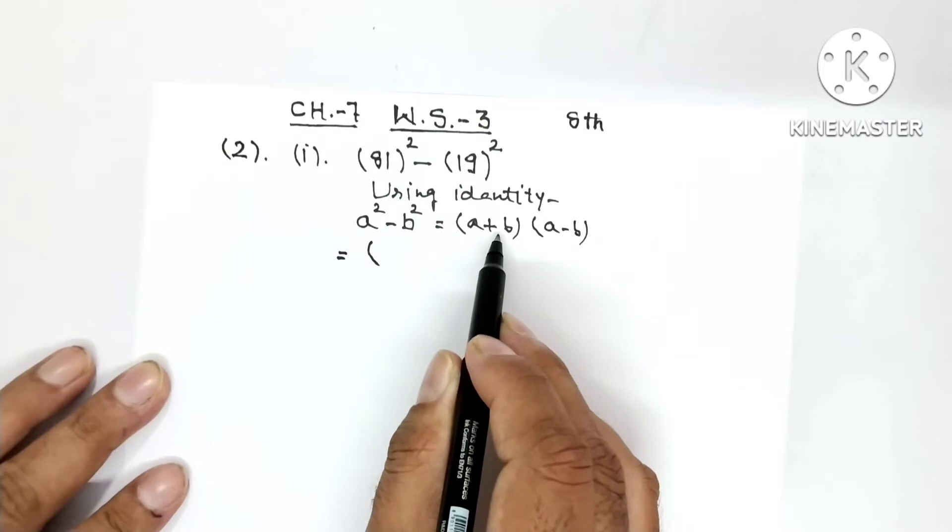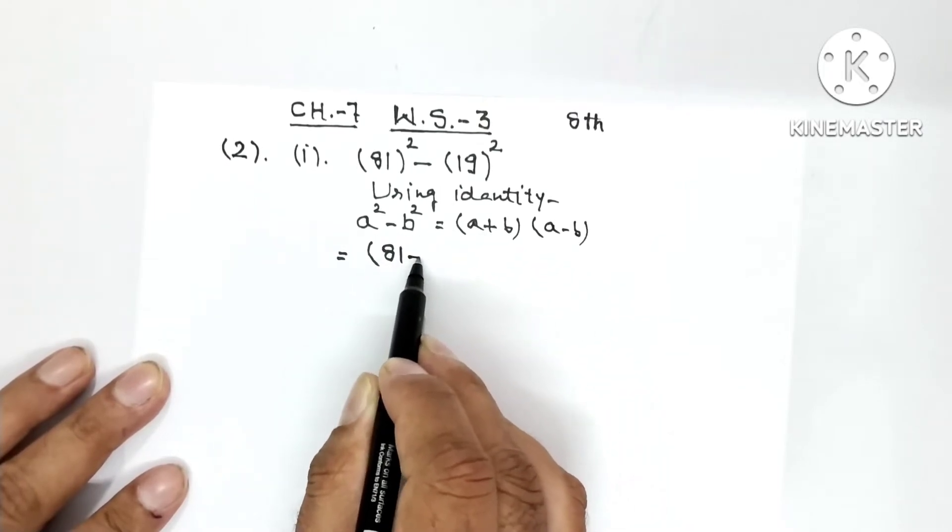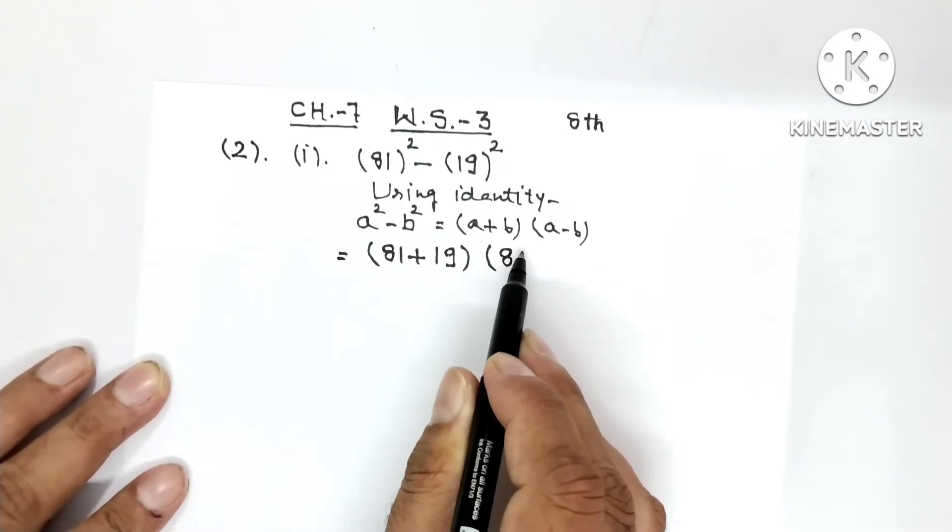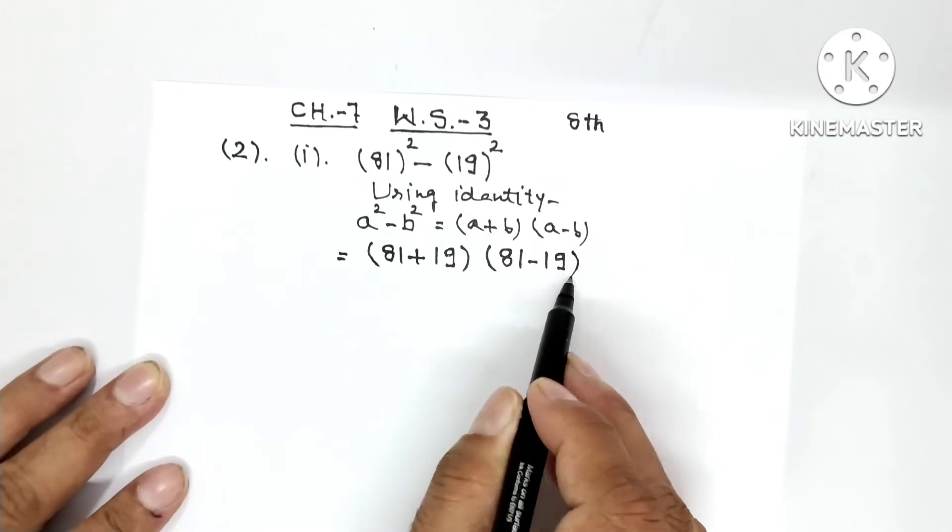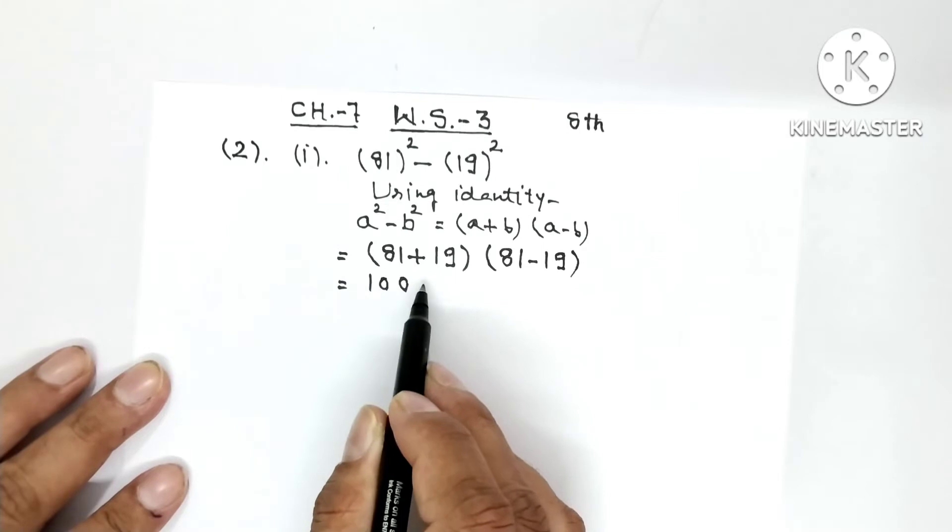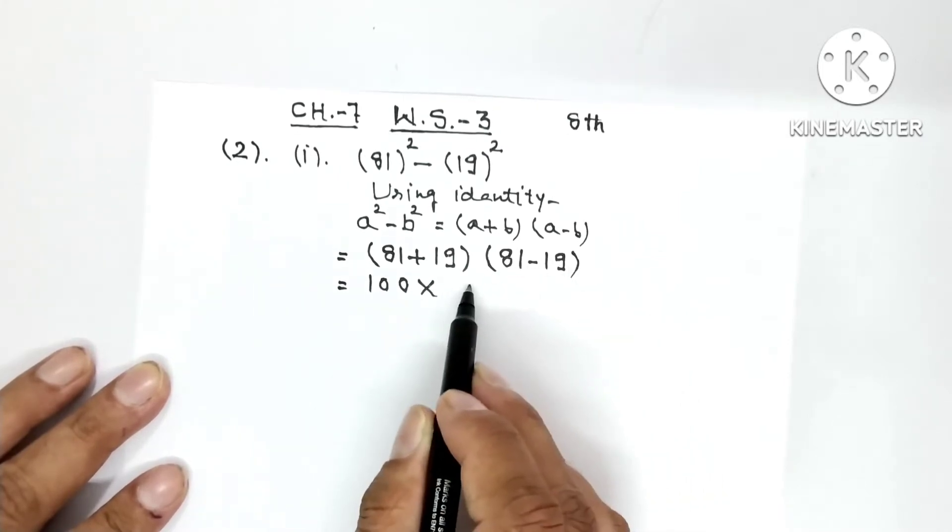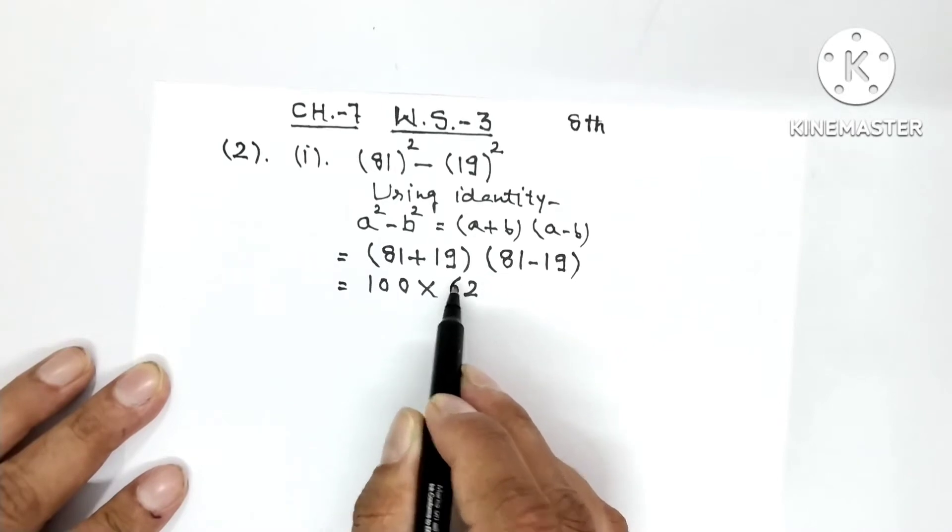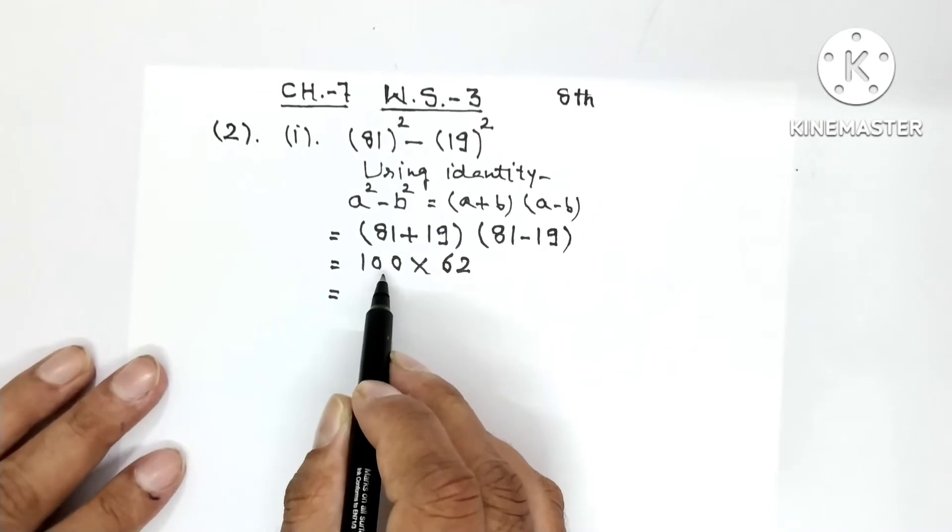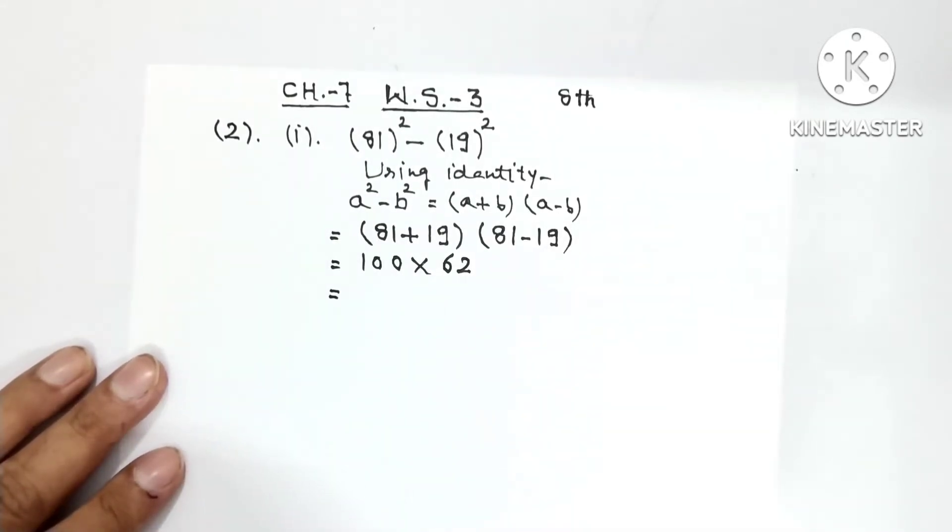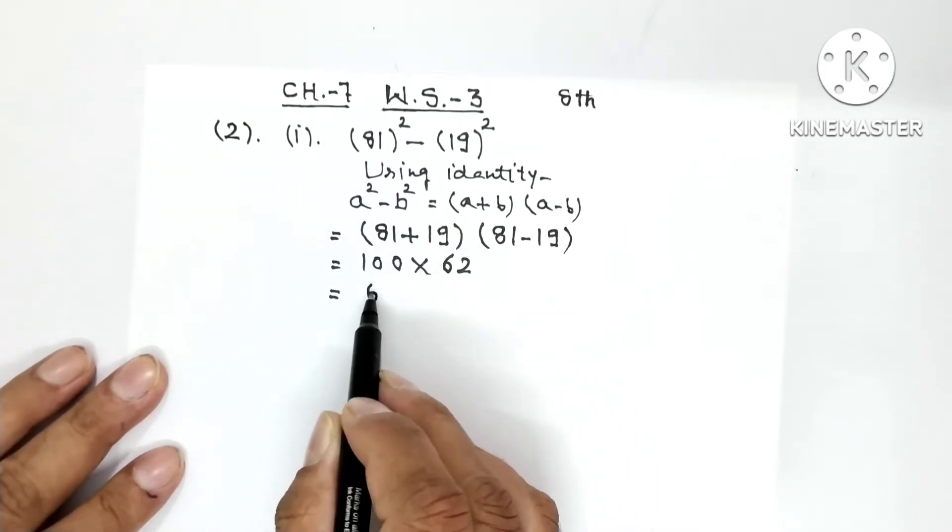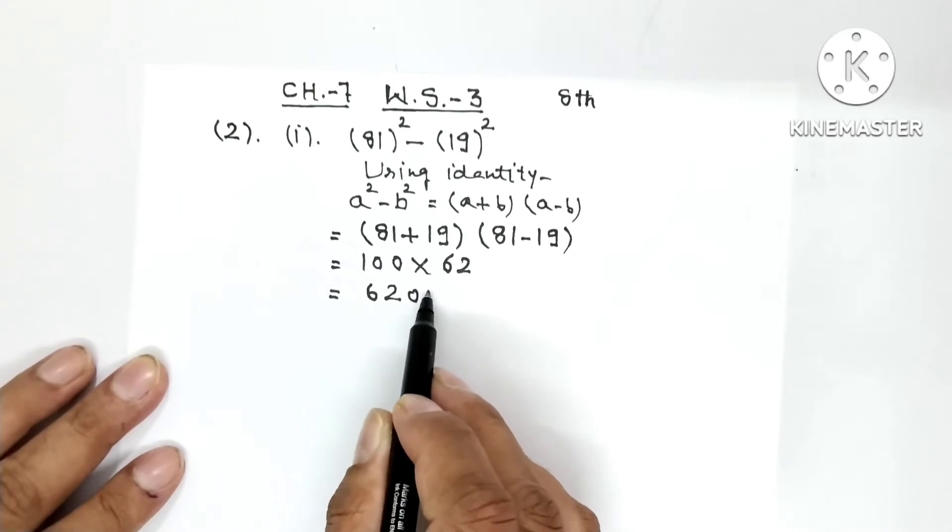Here a plus b, a was 81, plus b is 19. So one bracket has 81 plus 19, and the other has 81 minus 19. If you add 19 to 81, you get 100, multiplied by 11 minus 9 is 2, 7 minus 1 is 6, 62. 100 into 62. You can apply the rule, 1s are 62, and after that how many zeros, 2. So the answer is 6200.